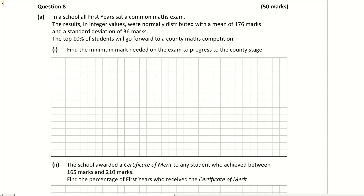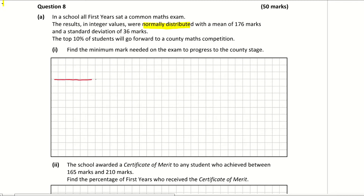Question 8a, part 1: find the minimum mark needed on the exam to progress to the county stage. The important bit here is the normal distribution, so that's drawing our attention to the bell curve. We're going to sketch that out here just so we can visualize what's happening in this question. It's telling us that we have a mean mark of 176.